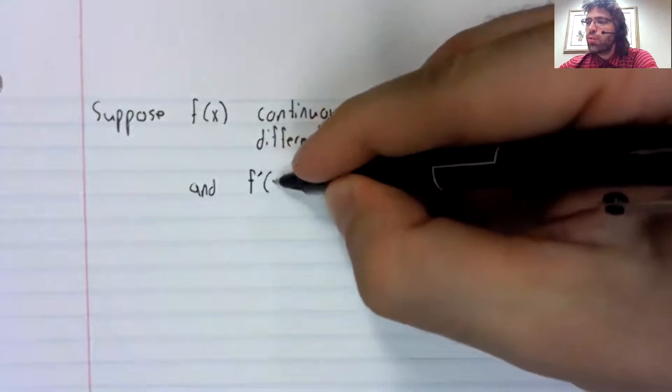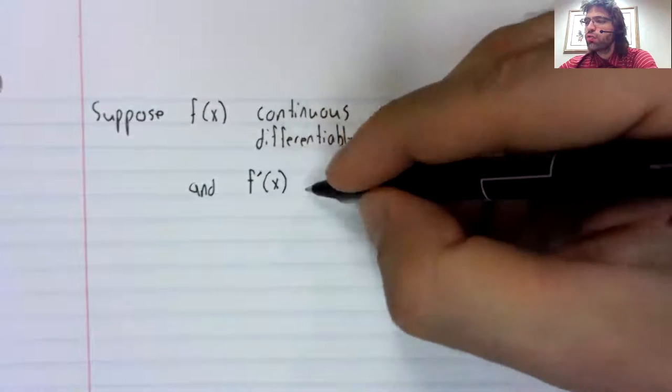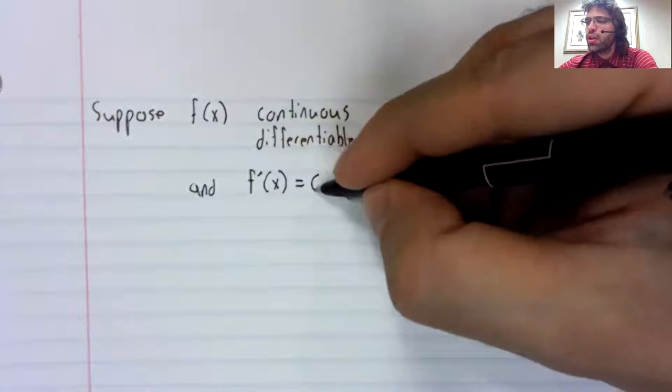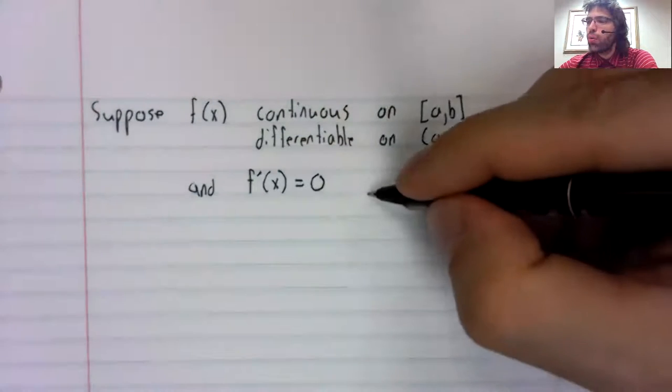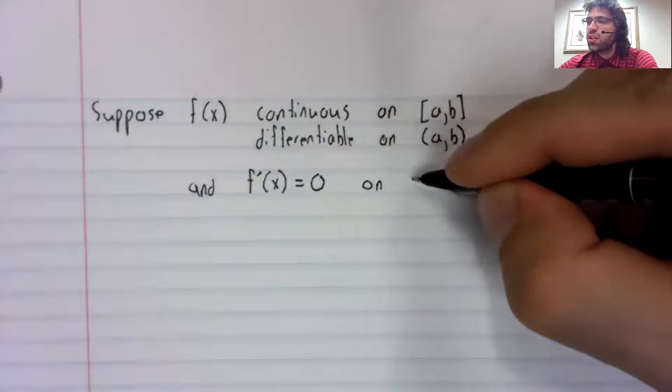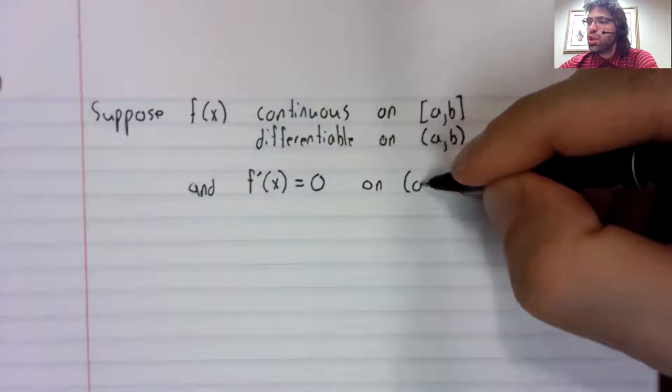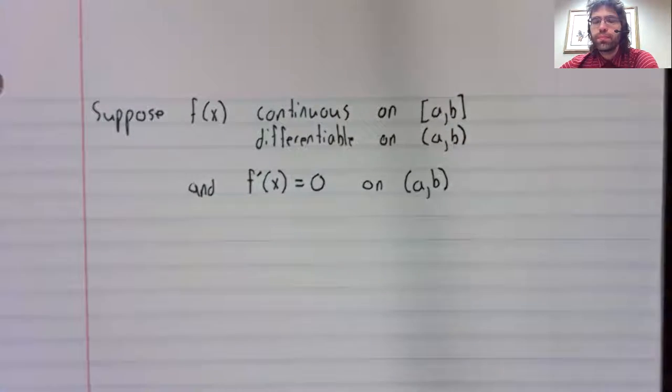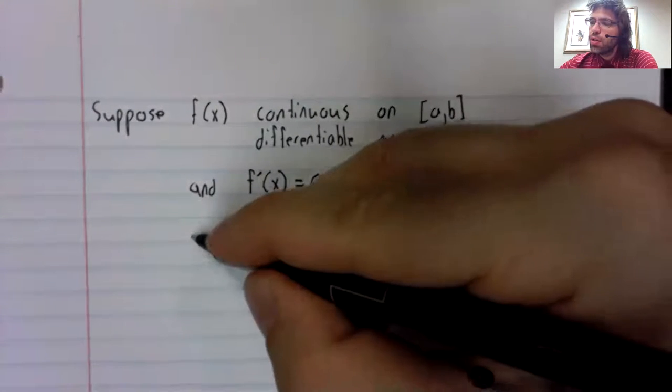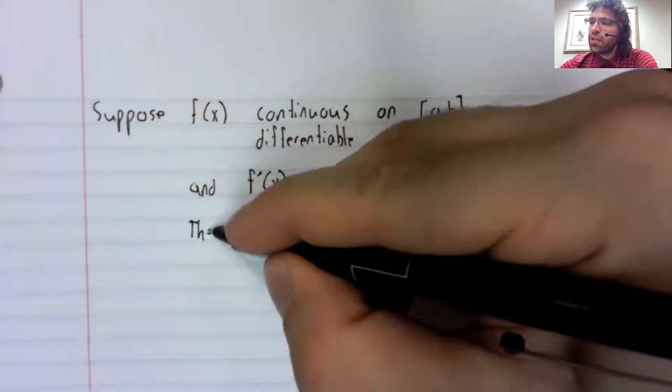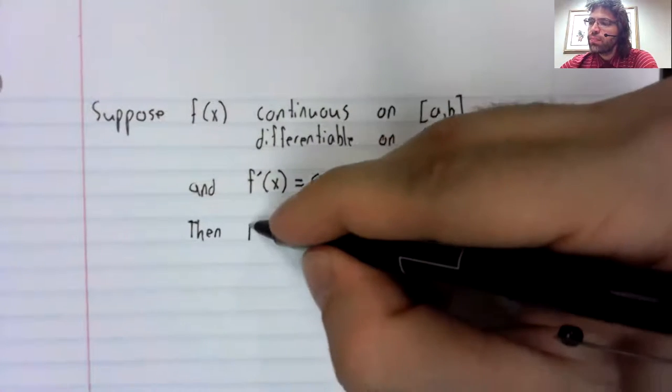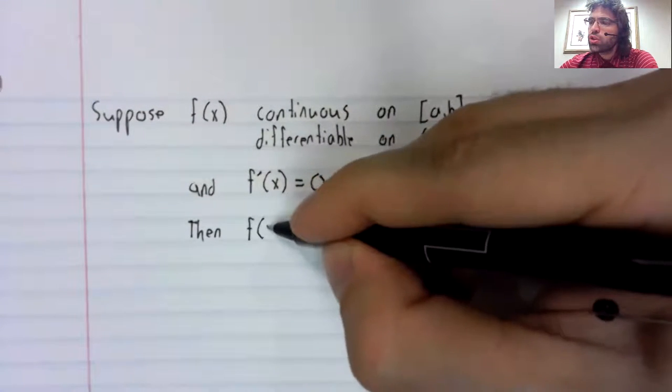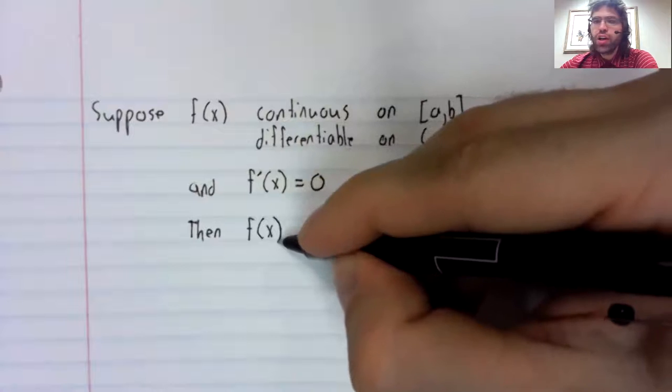And suppose that the derivative is always zero. Then we can say something about the original function.